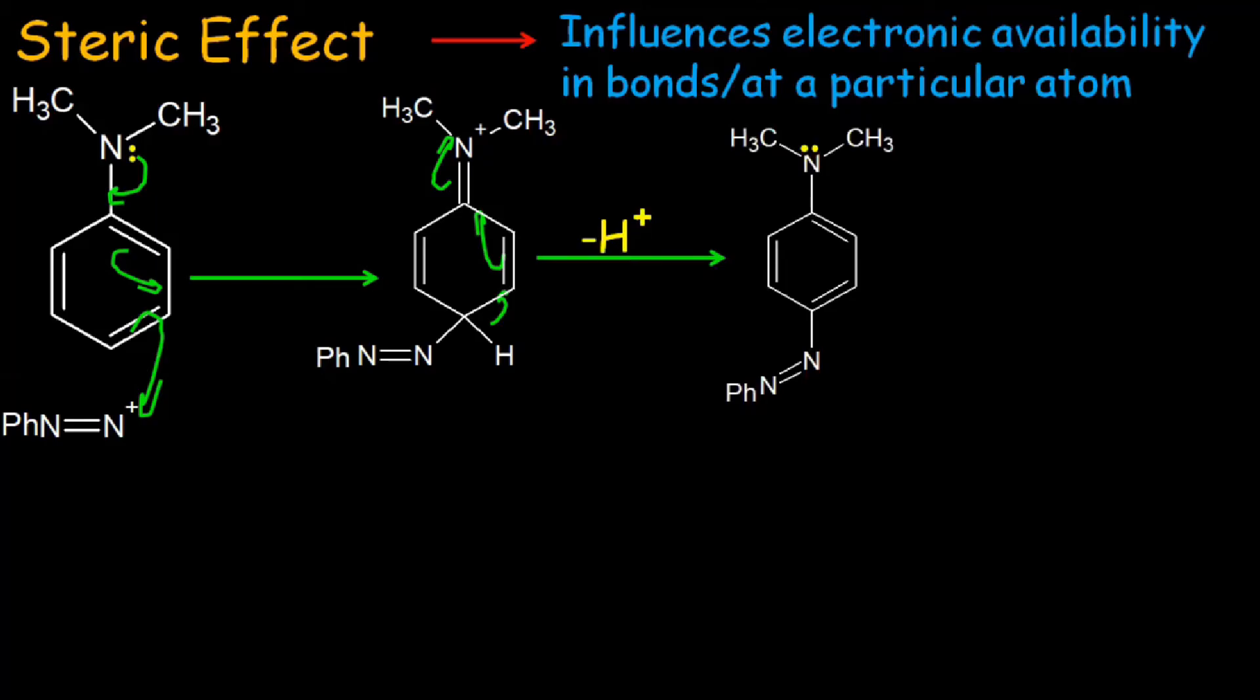This reaction of azocoupling proceeds when we use a substrate of N,N-dimethyl aniline, but it does not proceed when the derivative of N,N-dimethyl aniline is used. This substrate is dialkylated at ortho-position. Why does this reaction not proceed with the derivative of N,N-dimethyl aniline? The reason behind it is the steric effect.